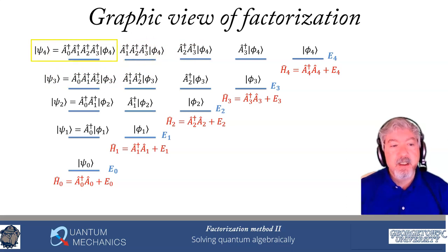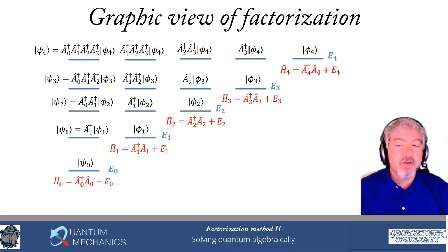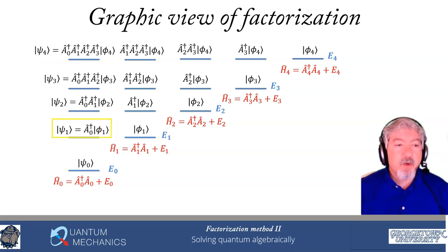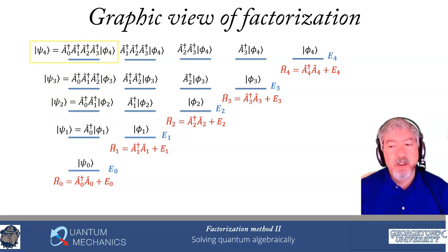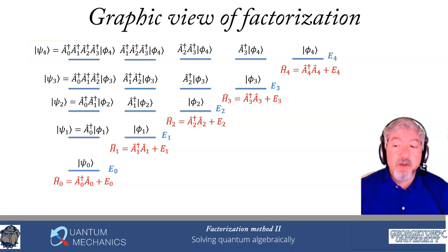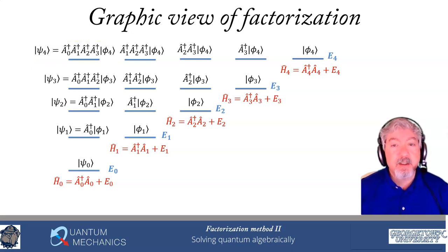If you look at this, you can see that for the original Hamiltonian of interest that we're solving, those wave functions ψ1, ψ2, ψ3, ψ4 all share a similar pattern. They all start with an A0†, they go all the way up to AN−1, and they operate on φN. That's the way those operators are created.